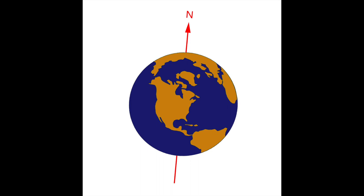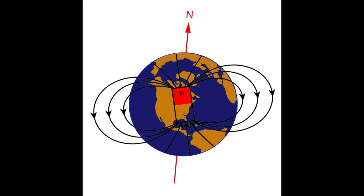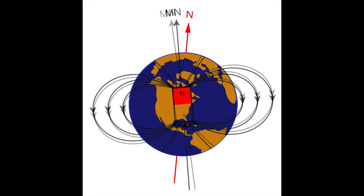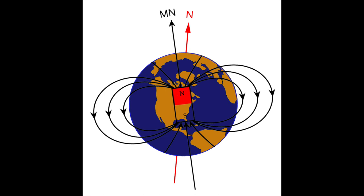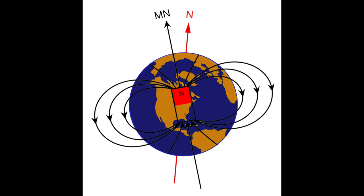The earth rotates on an imaginary axis and the very top of this axis is true north. The earth's magnetic field is caused by currents of electricity that flow in the molten core at the center of the earth, which is made up of nickel and other metals. This magnetic field also has an axis, but it doesn't line up perfectly with earth's rotational axis. And because the magnetic field is generated by liquid metal sloshing around in the core, magnetic north drifts slightly over time. This is one of the reasons it's important to use a current topo map so you know what the current declination angle is in your area.